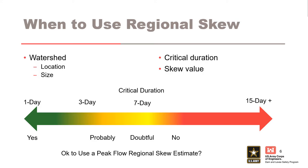It is important to read through the regional skew report to not only locate the information but also understand the region and the data used for the study in order to judge the applicability of the analysis for your site. In general, the drainage area for your site should be like those included in the regional skew study. For example, if the regional skew study evaluated basins with drainage areas between 100 and 1000 square miles, your project should be within this range.